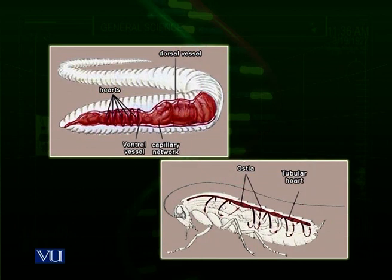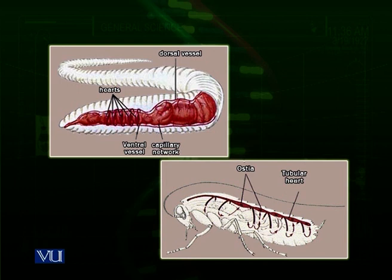We call it a circulatory system because this is for the circulation of materials within the body, and sometimes they are exchanged with the environment when required. There are two types of circulatory systems in animals: open and closed. Here you can see in a diagram a comparison of an open and a closed circulatory system. On the right there is a diagram of an insect, and on the left there is a diagram of an earthworm. In the insects there is an open circulatory system. There is a series of hearts towards the dorsal side of the body.